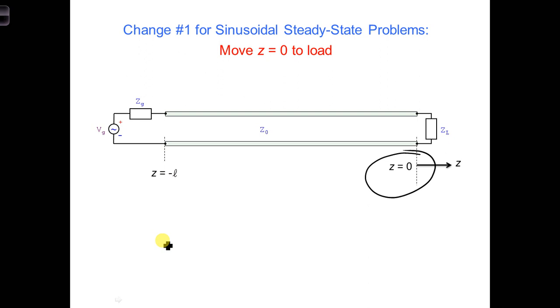Remember, in the steady state, all the reflections have already occurred. So in this case, the generator does know how long the transmission line is and what's at the end of it. Now having z equals zero at the load means we have negative z values everywhere along the transmission line, which is kind of annoying. What might we do about this so we don't have to keep track of an extra negative sign?